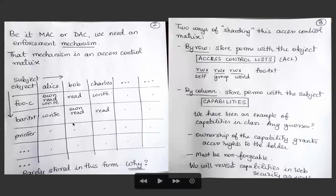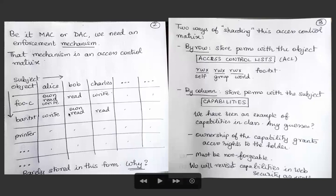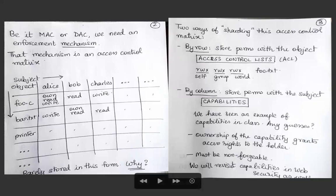Here's a question: how do you store this access control matrix? The claim is that it is rarely ever stored in its raw form. Consider a real system like one in a university department with about a thousand users — that means a thousand columns in the matrix. And there may be on the order of a million resources to protect. If you do 'find /' from the root directory you'll be surprised at the number of files.